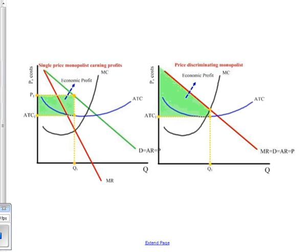They always are going to produce where MR equals MC. In this case, since demand and marginal revenue are the same thing, they also still produce at MR equals MC. And of course, profit in both cases is price minus ATC times the quantity produced.